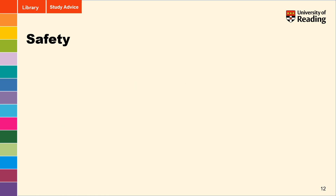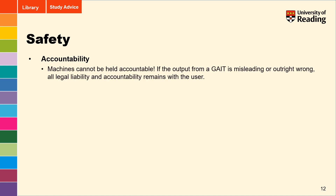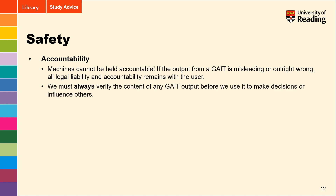Last, but by no means least, we must take good care of our own safety when using generative AI tools. We are ultimately held accountable for the work that we produce and submit for assessment — machines cannot be held accountable. Whilst we should never submit outright generated content as our own, if the information we have used in our work from a GAT is misleading or outright wrong, all legal liability and accountability will still remain with the user. As such, we must always verify the content of any GAT output before we use it to make decisions or influence others.